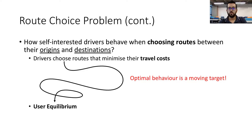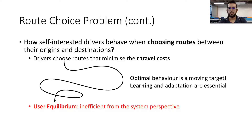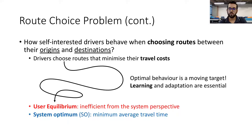This makes finding this optimal behavior a moving target. As such, learning becomes an essential ability for the drivers to successfully reach their objectives. The second challenge is that the user equilibrium doesn't represent the system at its best operation — in fact, it could be considerably worse than the system optimum. So the aim here is to enforce agents to choose roads that minimize congestion and thus maximize the social welfare, which is equivalent to minimizing drivers' average travel time.